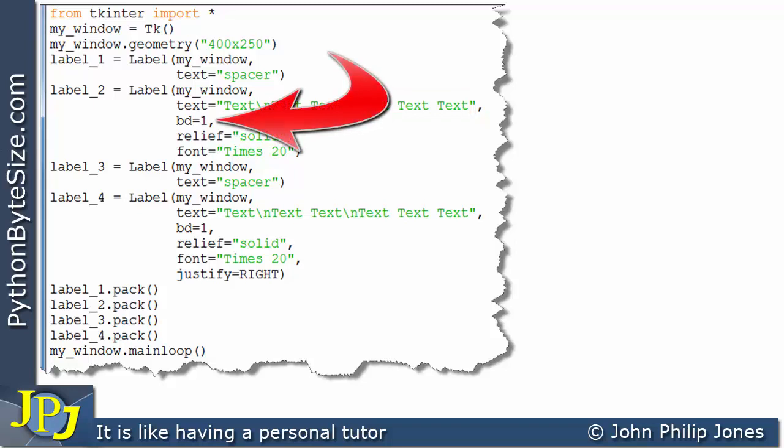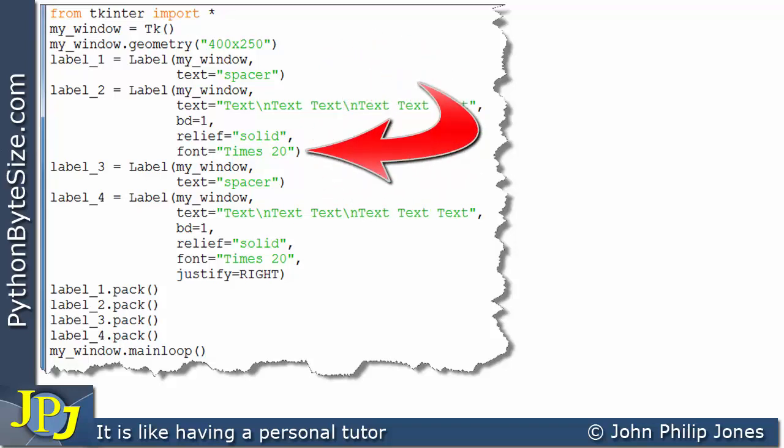We've got a border with the 1, a relief of solid, which means we'll be able to see the boundary of the label. And here I'm setting the font of the text to Times and its size to 20.